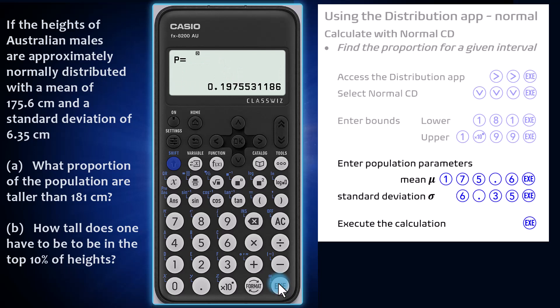This output, p equals 0.198 to three significant figures, is the proportion of Australian males taller than 181 centimeters—that is, a little bit less than 20 percent.